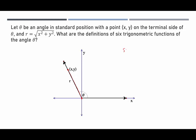We want to look at sine of theta, cosine of theta, tangent of theta, cosecant of theta (the reciprocal of sine), secant of theta (the reciprocal of cosine), and cotangent of theta (the reciprocal of tangent).